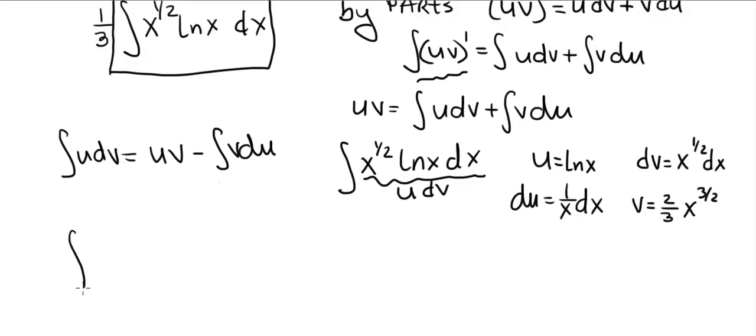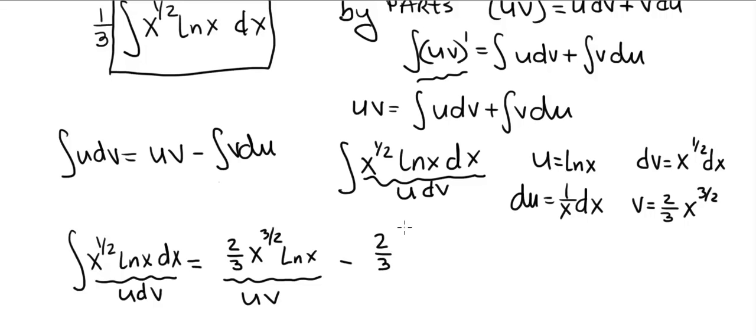Let's return to our integral, x to the one-half ln of x. So this is the integral of udv. By the formula, this is u times v. So let's write it like this. Two-thirds x to the three-halves times ln of x. This is actually v times u, but that's the same as uv. Minus the integral of vdu. So let's multiply. We have the two-thirds out in front. And then x to the three-halves divided by x is x to the one-half dx.